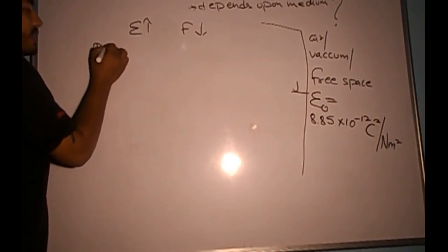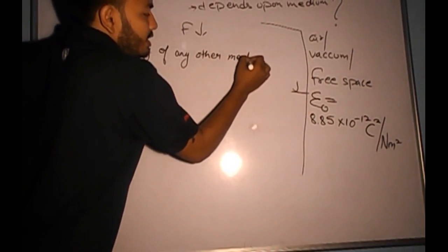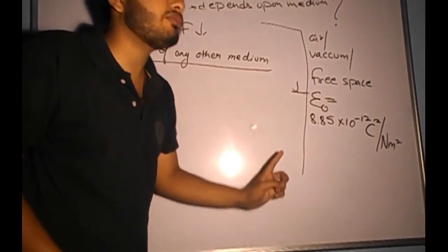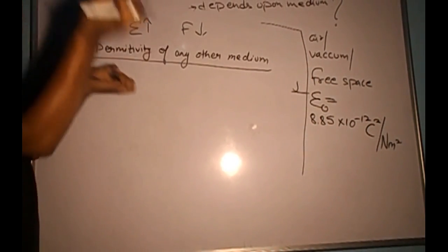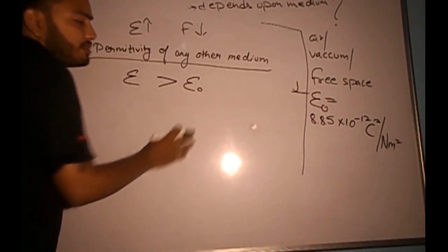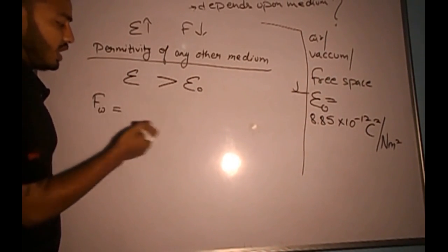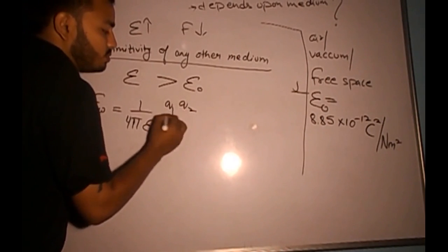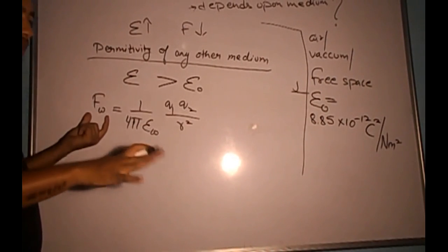Now consider the permittivity of any other medium. We see that permittivity has the smallest value for air — any other medium has permittivity greater than ε₀. For example, if charges are put in water, the force is 1/(4πε_water) × Q1Q2/R², where ε_water is definitely greater than ε₀. So the force in water must be smaller than the force in air.